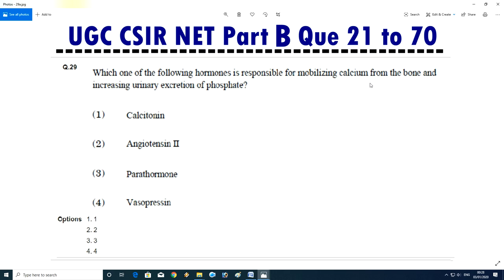Question No.30/31 - Which of the following hormone is responsible for mobilizing calcium from the bone and increasing urinary excretion of phosphate? Calcitonin, angiotensin 2, parathyroid hormone, or vasopressin. Answer is C, means third, parathyroid hormone.